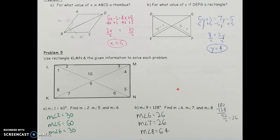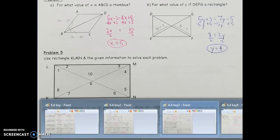If angle 9 is 128 degrees, I find angles 6 and 7 by looking at the bottom triangle. Taking 180 minus 128 gives 52 degrees total split between angles 6 and 7. Since they should be congruent, dividing 52 by 2 gives 26 degrees each. Then to find angle 8, I use the right angle at corner K: 90 minus 26 equals 64 degrees for angle 8. So I'm using those right-angle rules throughout the rectangle.